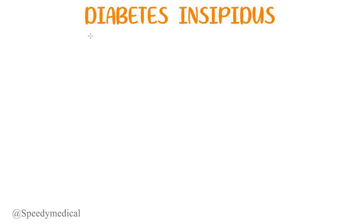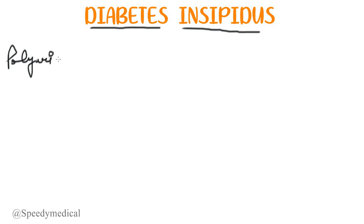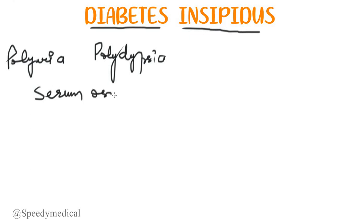Hello and welcome to our YouTube channel. In this video we are going to take on diabetes insipidus. Diabetes insipidus is a disease which is characterized by polyuria, polydipsia, and an increase in the serum osmolarity. So we have three things in this disease: polyuria, polydipsia, and increased serum osmolarity.